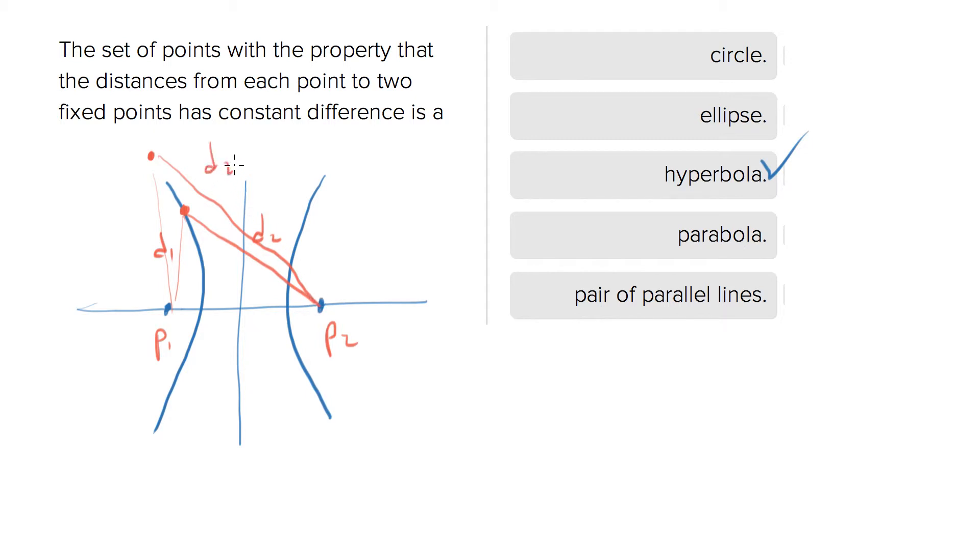Right, so say this is like d2 prime and d1 prime or something, and both of those dots are on the hyperbola. What they're saying is d2 prime minus d1 prime equals d2 minus d1. That's what they're saying.